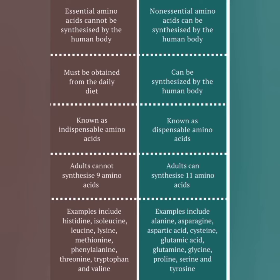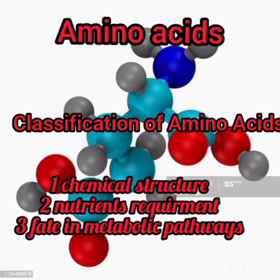And tyrosine. But essential amino acids cannot be synthesized by adults — there are nine amino acids. Examples include histidine, isoleucine, leucine, lysine, methionine, phenylalanine, tryptophan, threonine, and valine.